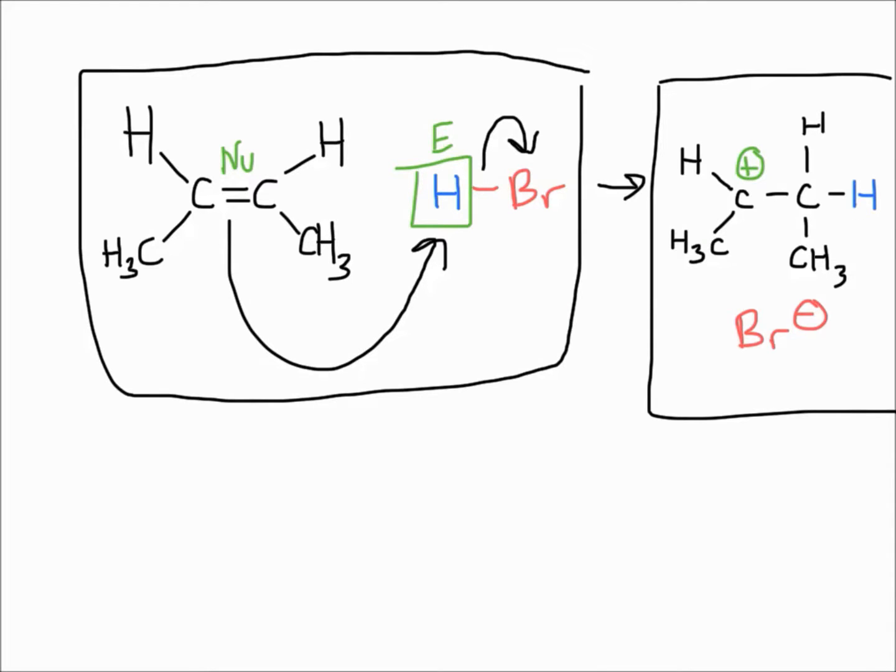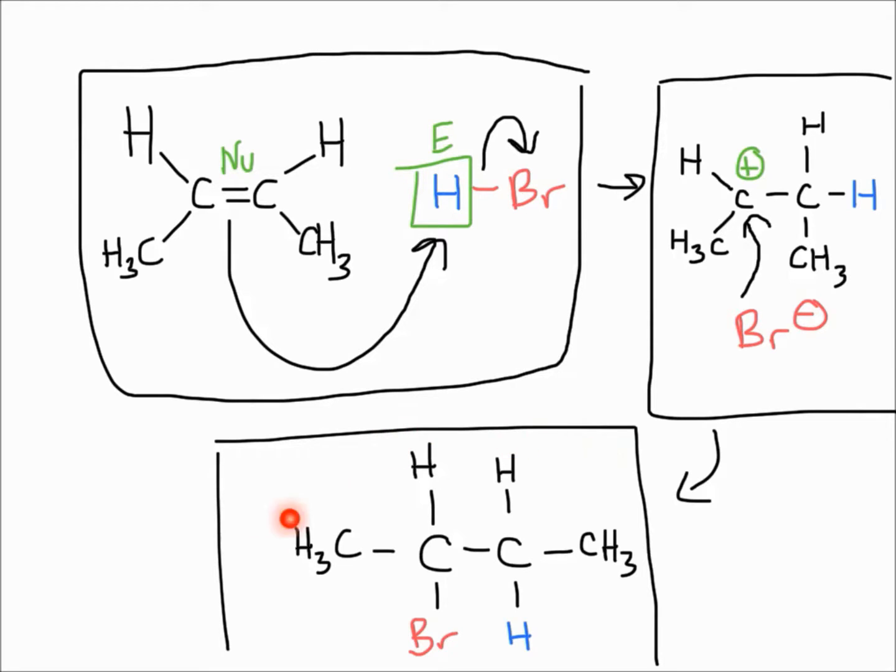You're going to get two products: a carbocation and a bromine anion. In the next step, this bromine is going to attack this carbocation and attach onto it. As you can see, this is your final product.